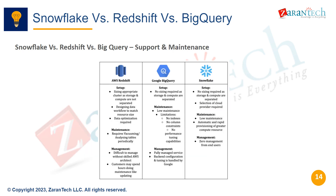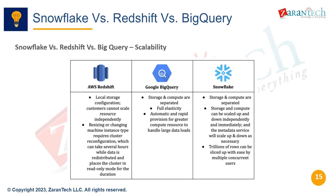Snowflake and BigQuery provide instant, self-service support, while Redshift relies on AWS ticket-based support. Snowflake and BigQuery also offer automatic scalability to manage spikes in usage, whereas Redshift requires manual intervention.